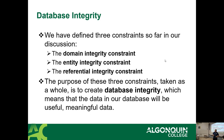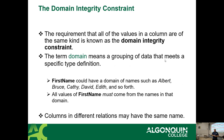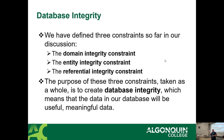Database integrity. We have defined three constraints so far. The purpose of those three kinds of constraints is to create database integrity — meaning the database will contain useful, meaningful data. The three are domain integrity, entity integrity, and referential integrity constraints.